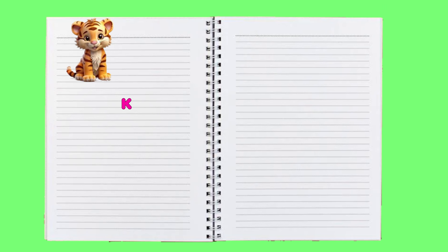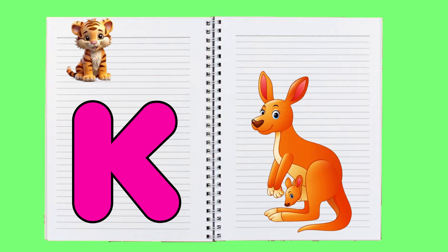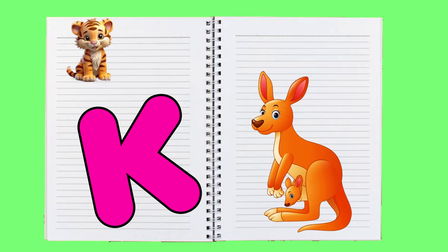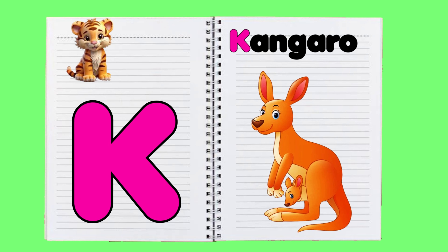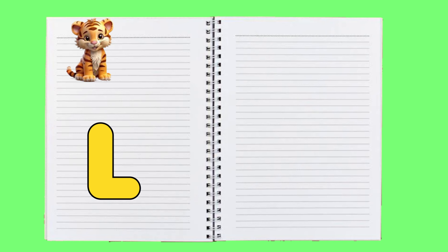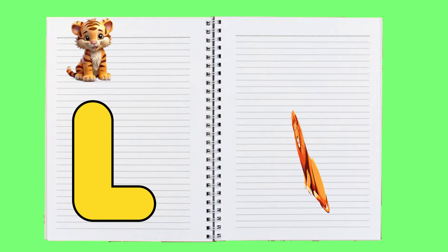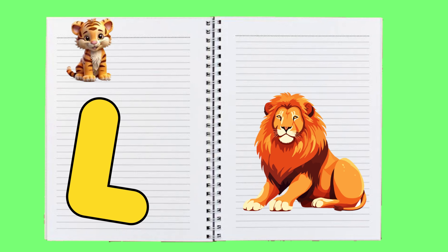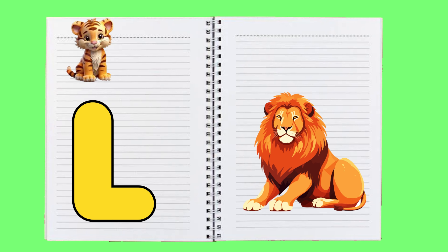K is for kangaroo, k-k-kangaroo. L is for lion, l-l-lion.